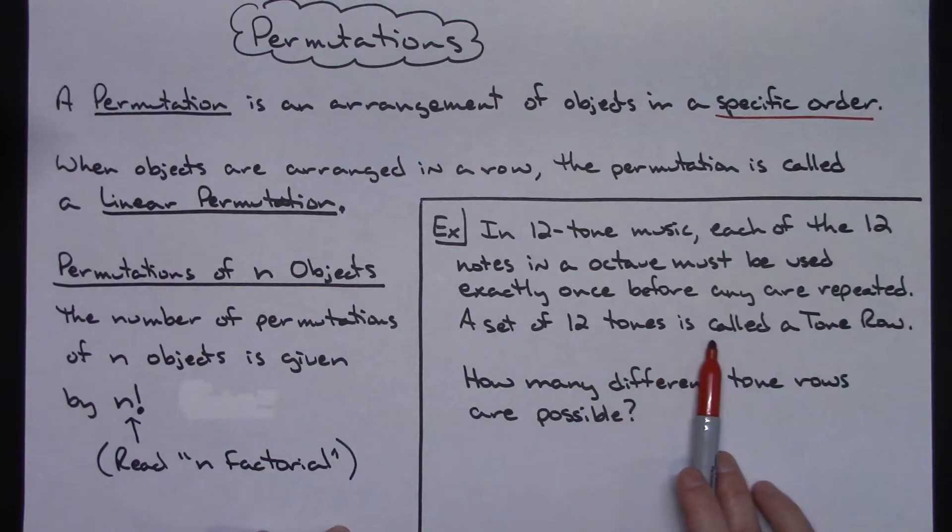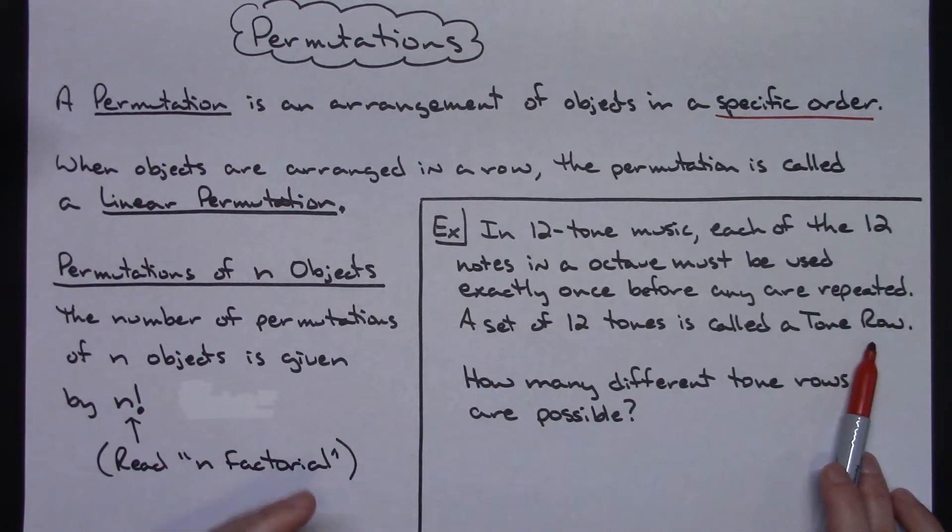A set of 12 tones is called a tone row. Tone row consists of 12 tones. The question is how many different tone rows are possible?